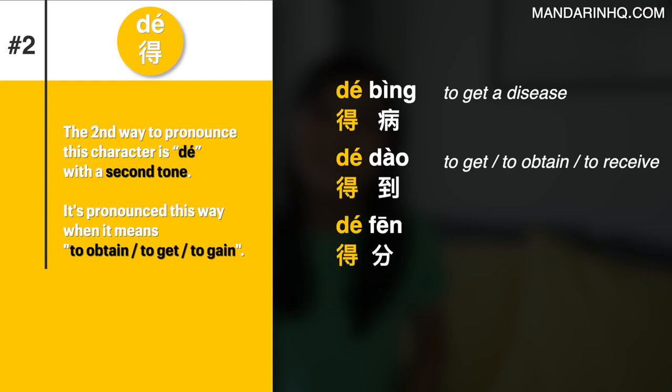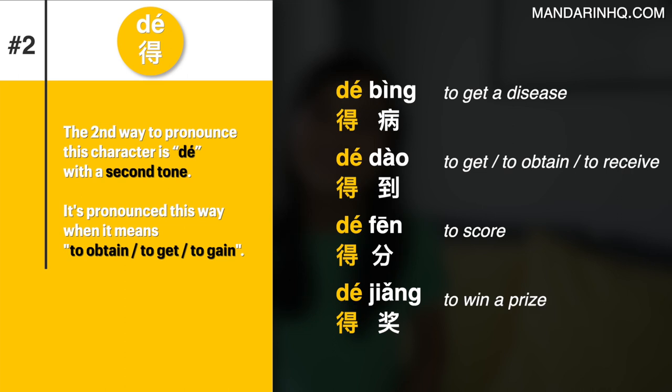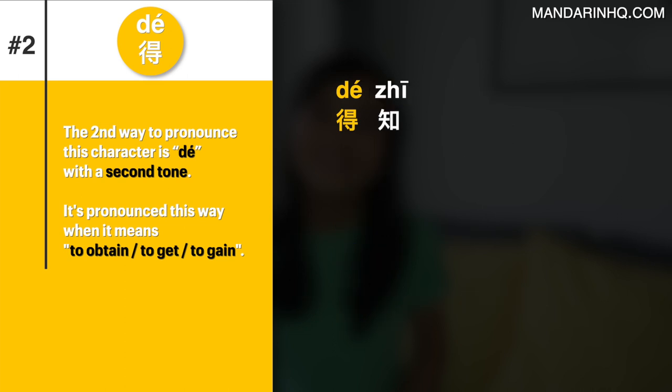More phrases with 得: 得分 (to score), 得奖 (to win the prize), 得知 (to learn of, to find out).